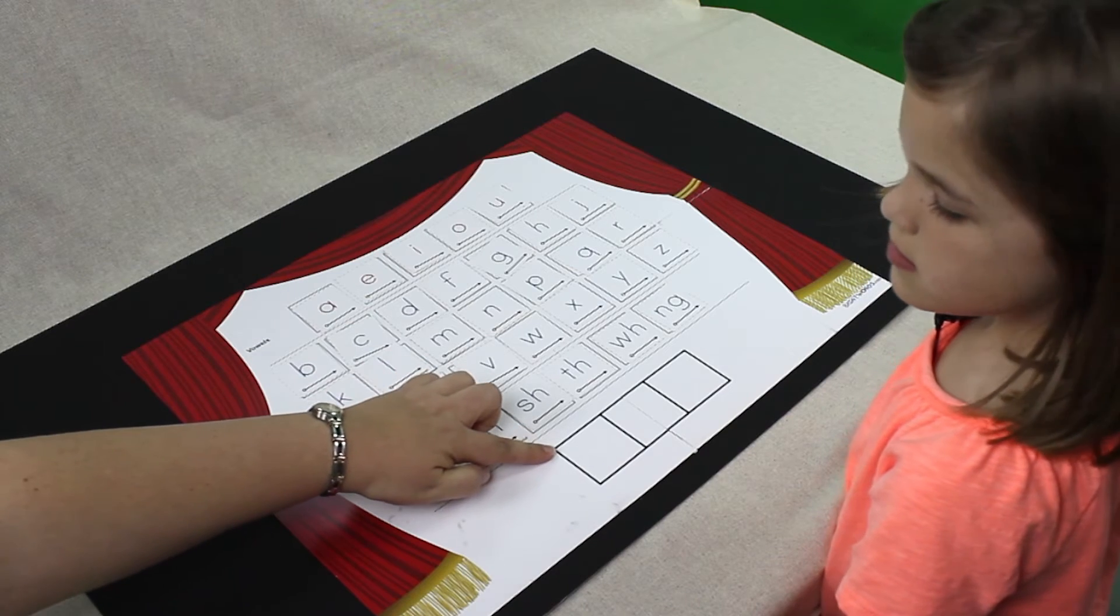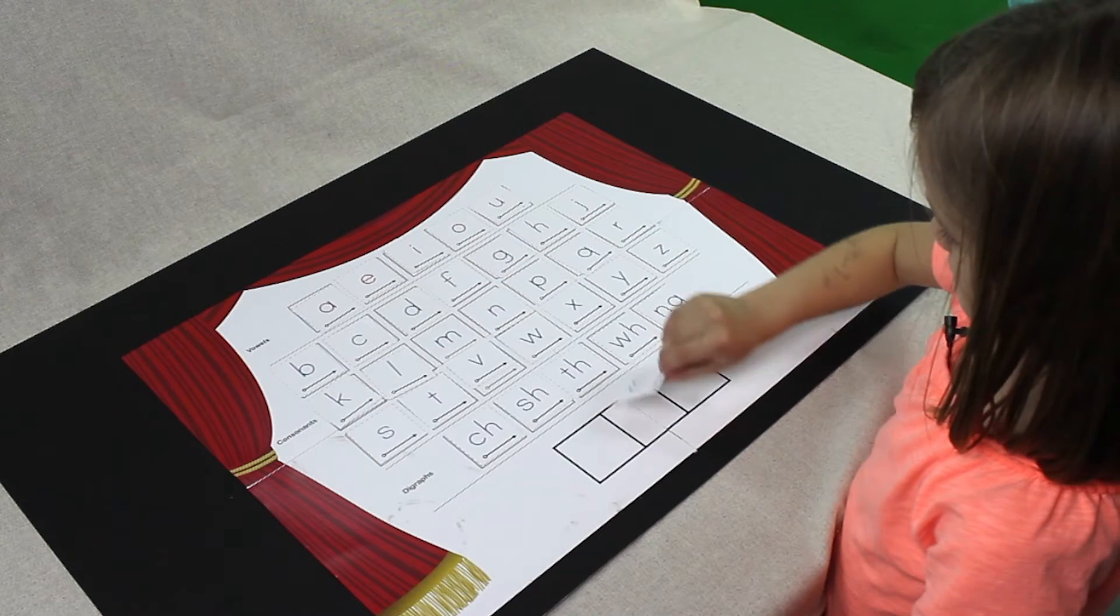I'll say three sounds. You find each sound when I say it, and move the card to the boxes at the bottom of the mat. Start here. Get ready. M-A-D.